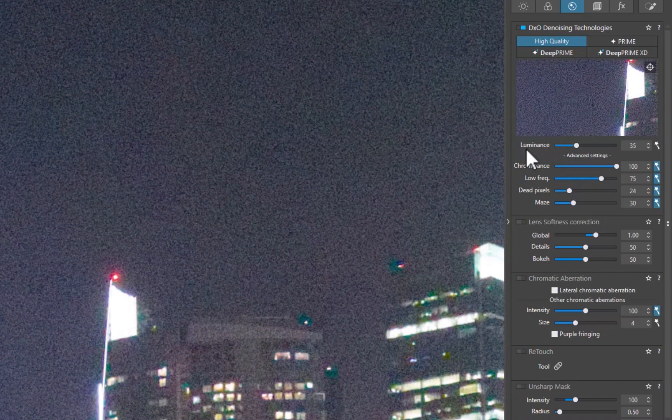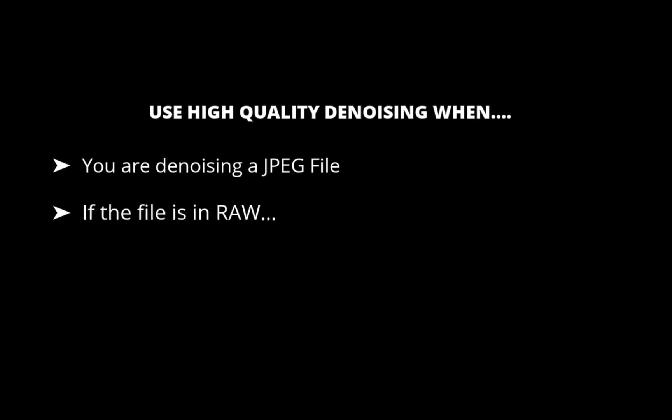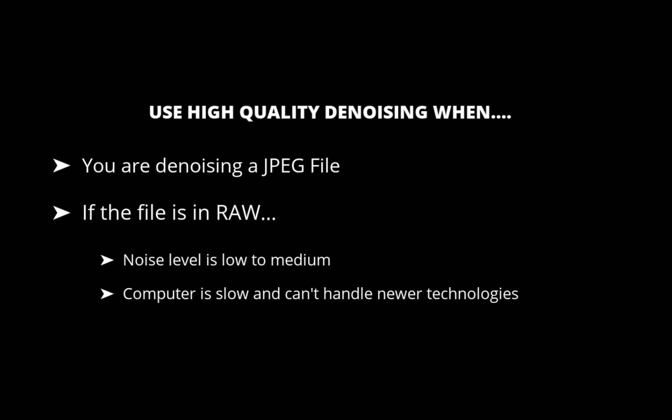When do you use high-quality denoising? If the file is JPEG, there is no choice — you have to use high-quality denoising, as no other option works with JPEG. If the file is RAW, high-quality denoising would be suitable if the noise is low to medium, if the computer running DxO is relatively old with a weak graphics card that can't handle newer technologies, or if you simply want the fastest denoising available.